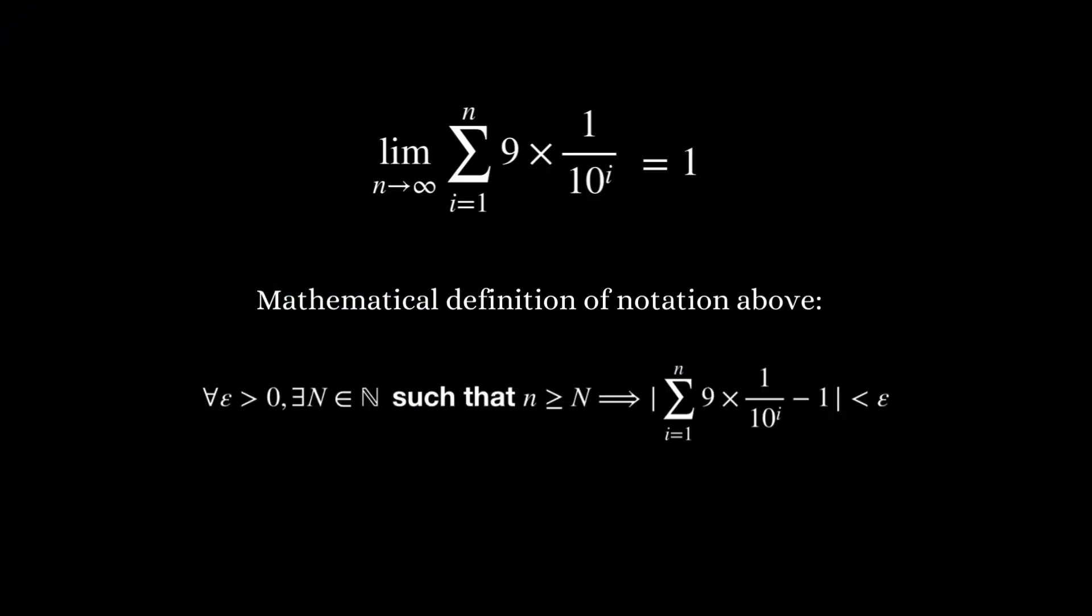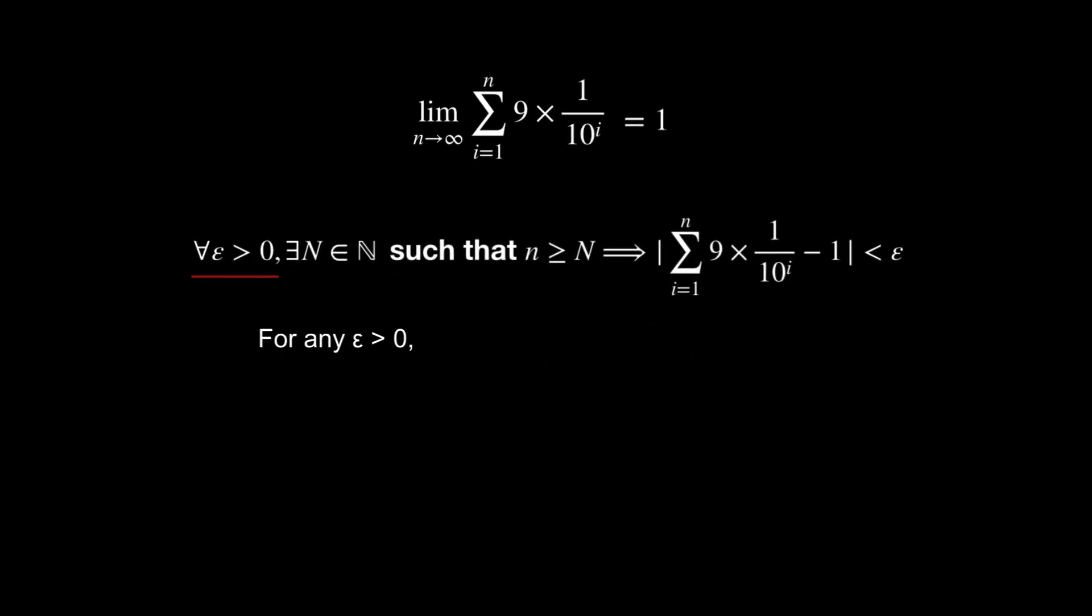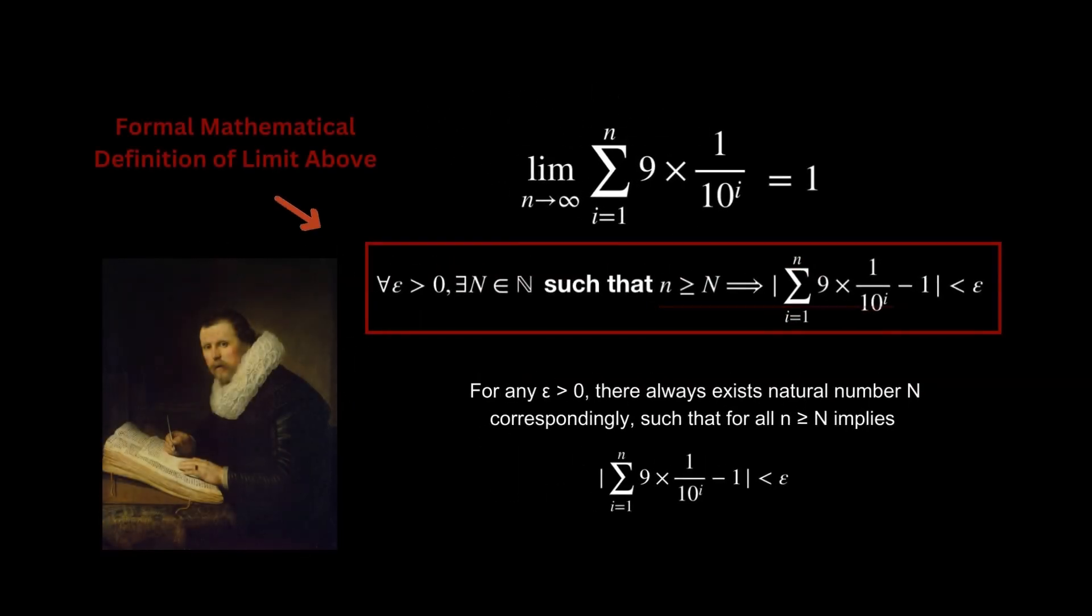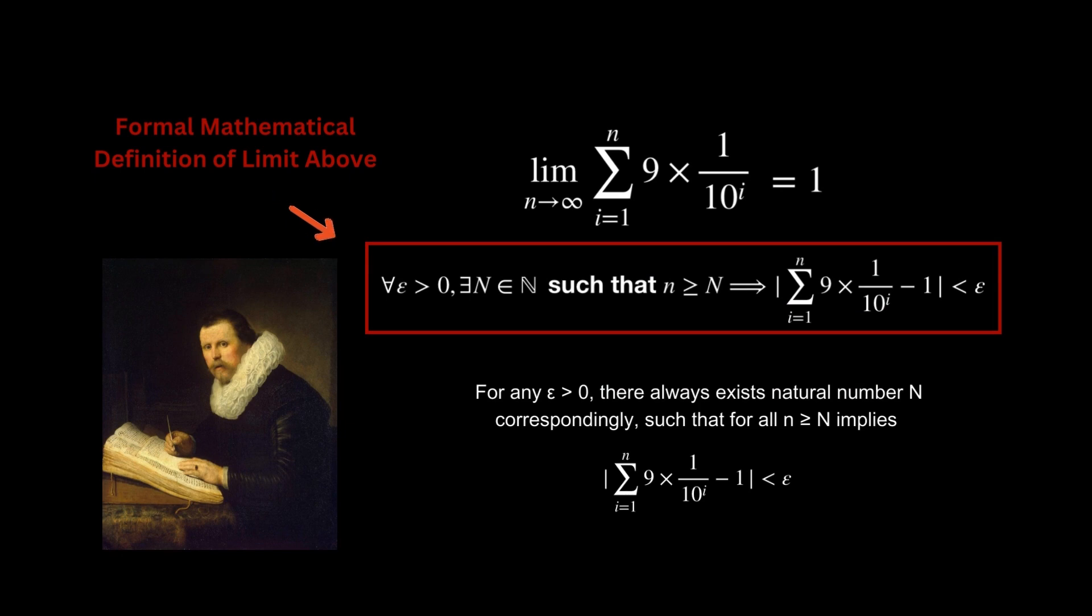Here is a formal definition of limit above in mathematical notation. It states that for any number epsilon greater than 0, there always exists some natural number N correspondingly, such that for any n greater than this N, the difference between this expression and 1 is less than epsilon. This is how mathematicians define what when n approaches infinity, some expression approaches 1 means mathematically.